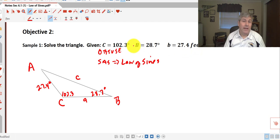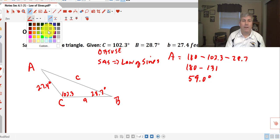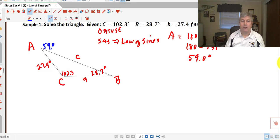Since we have two of the angles, we can always solve for the third angle. Angle A is simply going to equal 180 minus the 102.3 minus 28.7. 180 minus 131, we get 59.0 degrees for angle A. We know angle A is 59 just by knowing the sum of the interior angles of the triangle is 180.